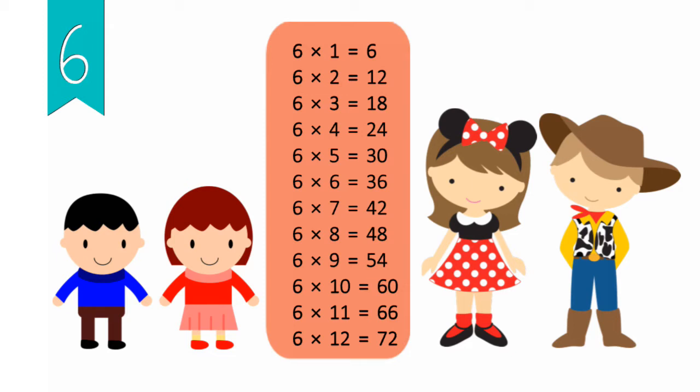6 x 1 equals 6, 6 x 2 equals 12, 6 x 3 equals 18, 6 x 4 equals 24, 6 x 5 equals 30, 6 x 6 equals 36, 6 x 7 equals 42, 6 x 8 equals 48, 6 x 9 equals 54, 6 x 10 equals 60, 6 x 11 equals 66, 6 x 12 equals 72.